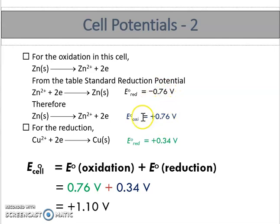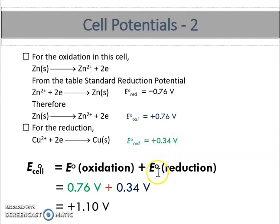For the reduction half, copper undergoes reduction so we use the given value directly: E⁰reduction = +0.34 V. Substituting into the second formula: E⁰cell = E⁰oxidation + E⁰reduction = 0.76 V + 0.34 V = +1.10 V. The answer is the same.